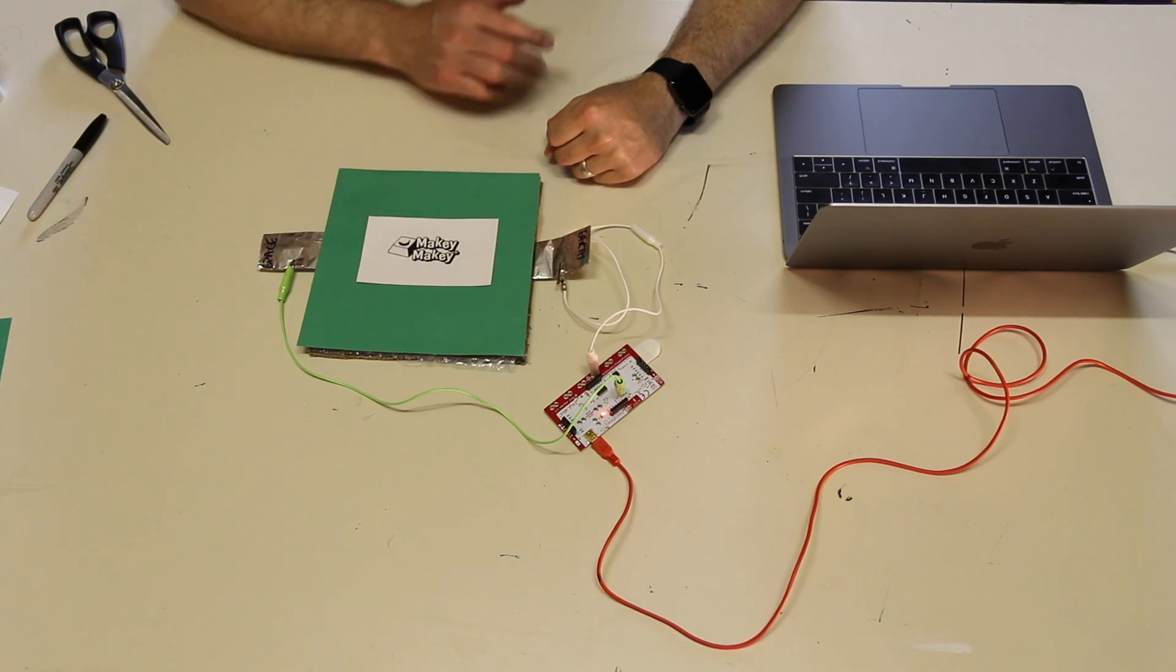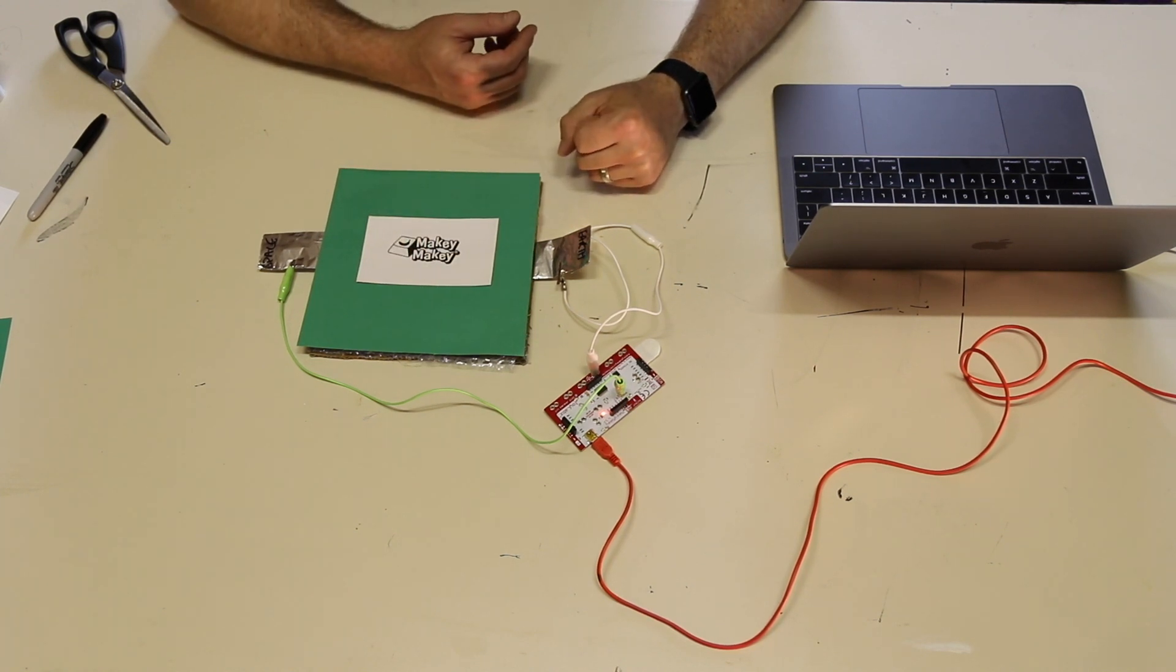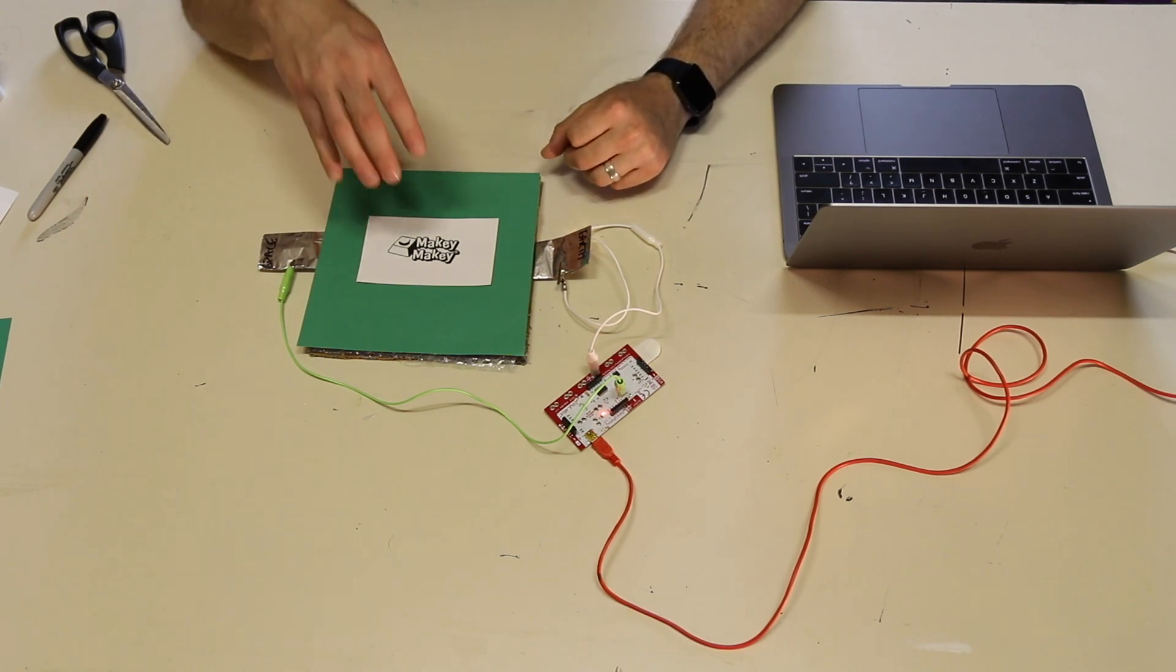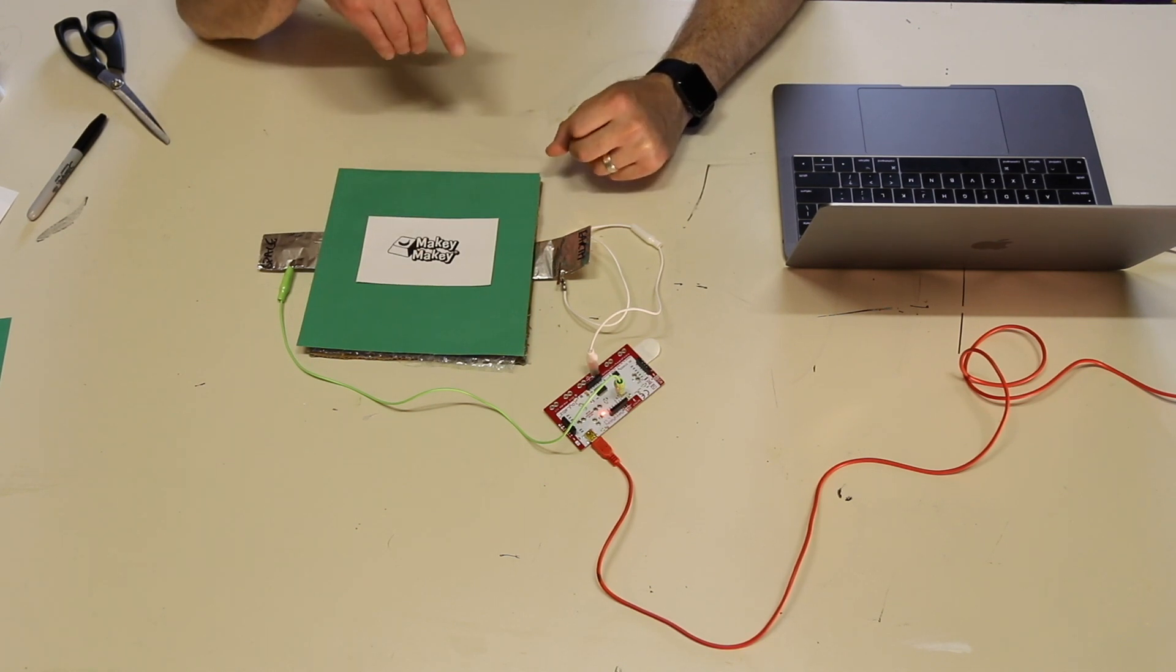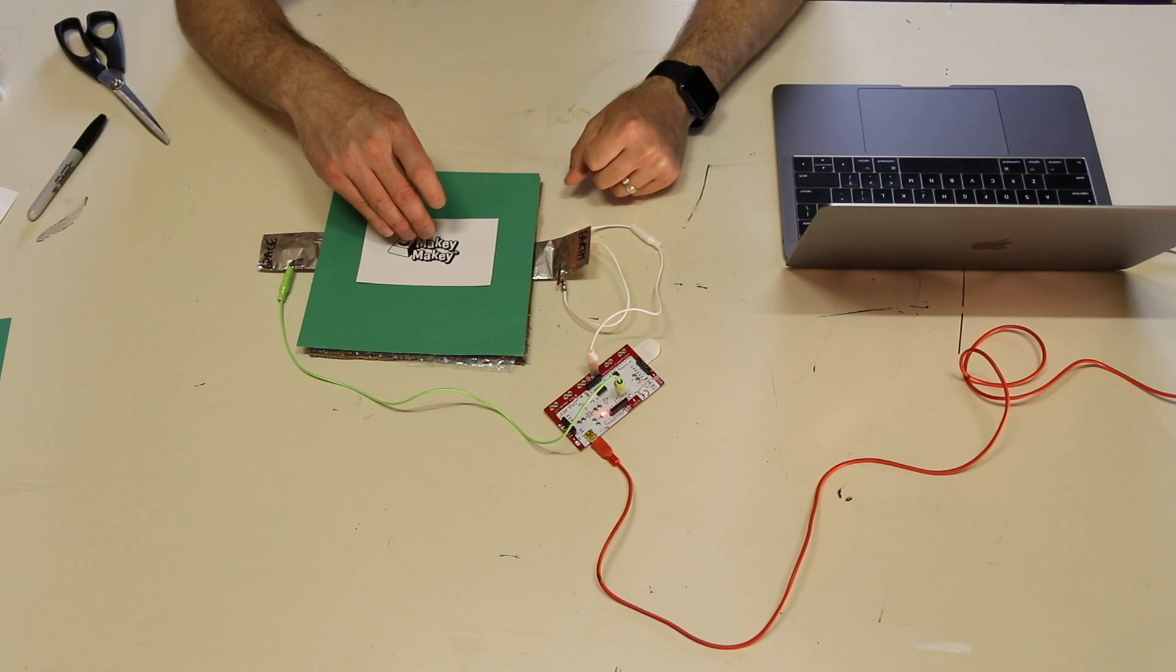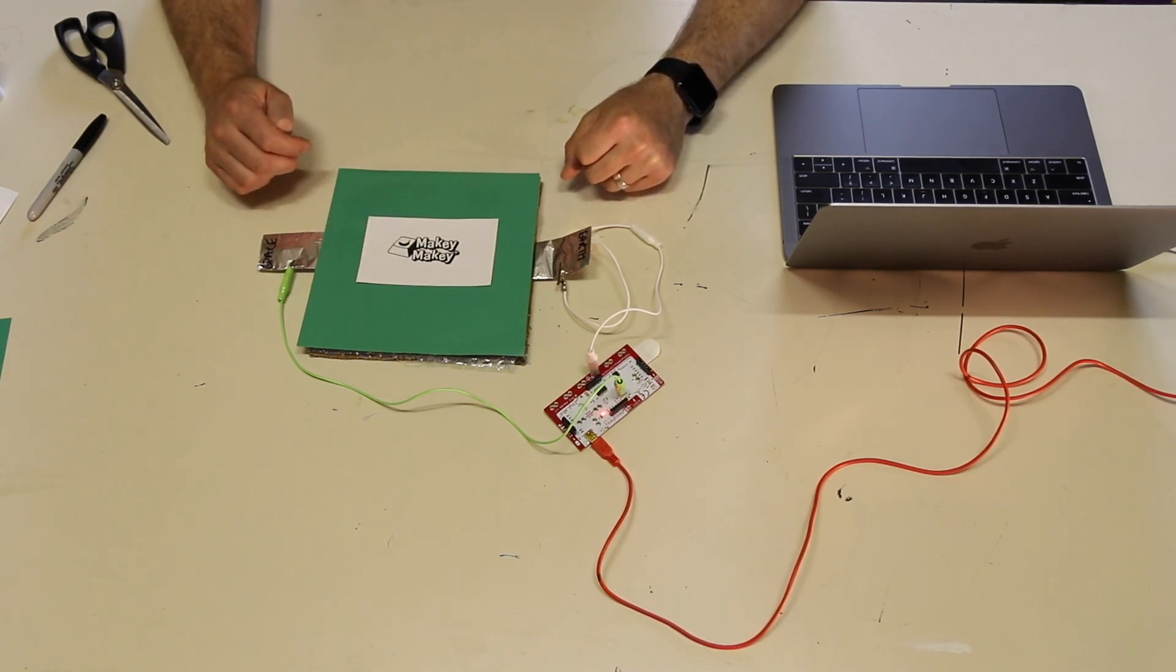These are great little switches for any Scratch project that your students are working on. You can have it where you stand on them, you press with your hand like so, or you can even have it where you throw objects like balls or things at it to make those two pieces of aluminum foil touch each other to create a reaction.